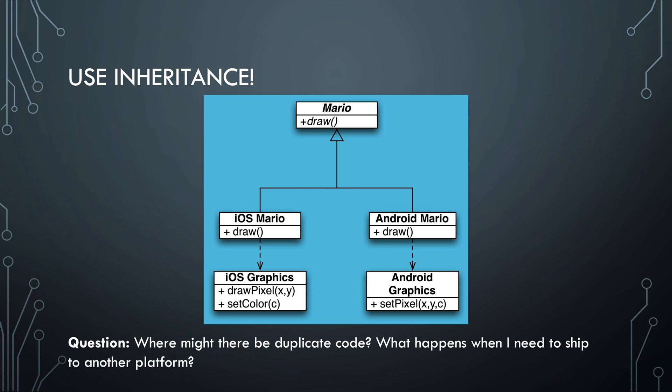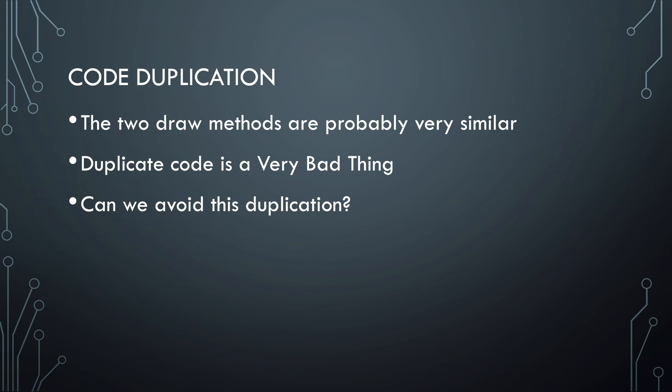Now, I'd like you to think about what this means in terms of the code. Where in the code will we find duplication? And what do we need to do if we add another platform — say, a Nintendo Switch? One thing you might have seen is that the draw methods of both Marios will be pretty similar. Mario on iOS will probably look just the same as Mario on Android. This means that the draw method for both of these subclasses will contain a lot of duplicate code, which is bad. So as a software designer, your response to this solution is probably: meh. Can we avoid it?